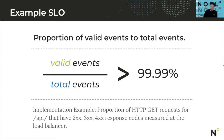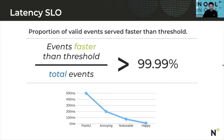It could be two nines, two and a half nines, three nines, four nines, etc. You can also have SLOs for latency. Latency is how fast something happened. And in the SLO model, the idea is to say how many of these events happened faster than a threshold that we set, relative to the total events that occurred.